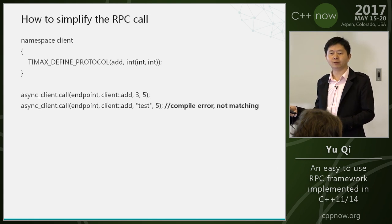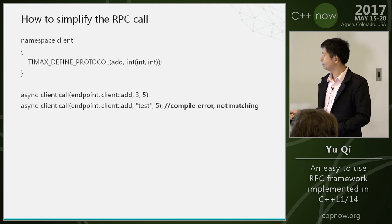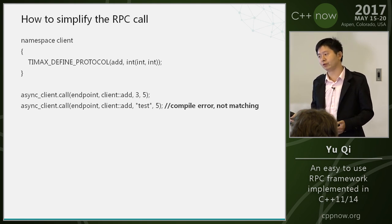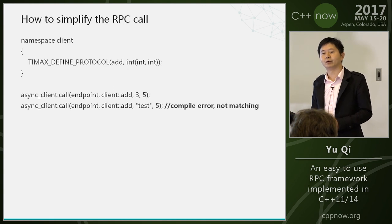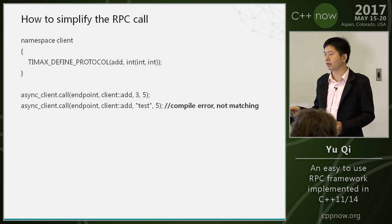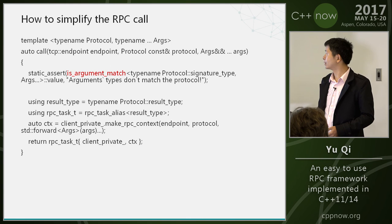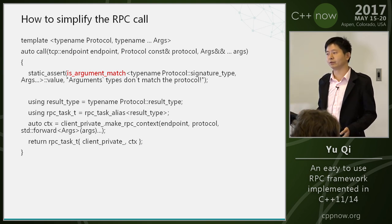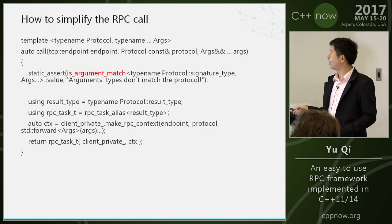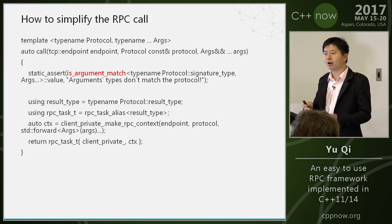Look at the RPC call — it is the user interface. You can use it to call any RPC service. I can also check for errors at compile time. If the argument is not right and you transfer it to the server, the server will find the error only at runtime, which is too late. I want to find errors at compile time. Here I use a variadic template — I really like this feature. I want to check the arguments at compile time using a trait: is_argument_match.